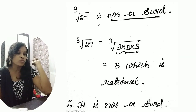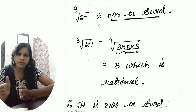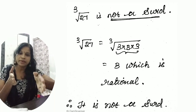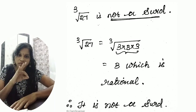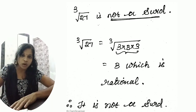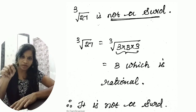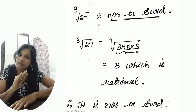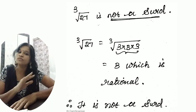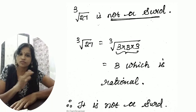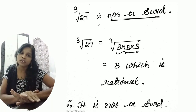One more example: ∛27. How do you split 27? It is 3 × 3 × 3. We have exactly 3 factors. According to cube root, we can take one number outside, giving us 3. So the value is 3, which is rational — not irrational. Therefore this root is not an irrational root and ∛27 is not a surd. So perfect squares and perfect cubes are not surds.